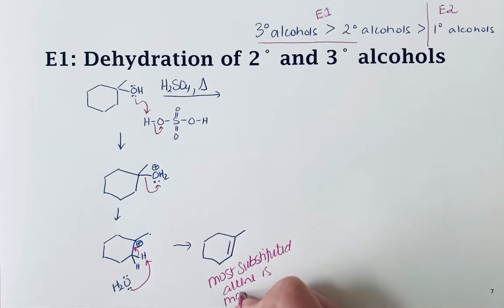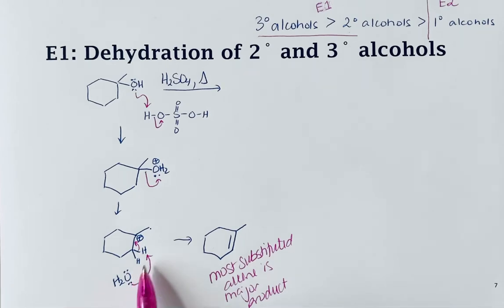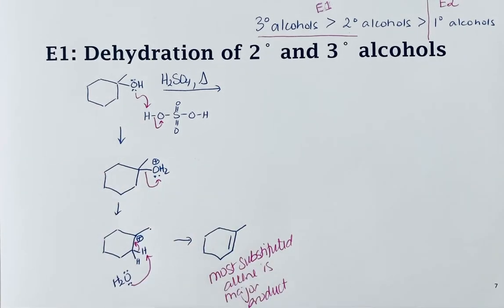With E1 reactions, you don't have to worry about where that proton is relative to the leaving group because it's a stepwise reaction. This is the mechanism with a tertiary alcohol.